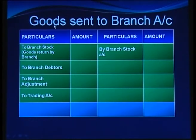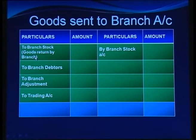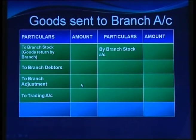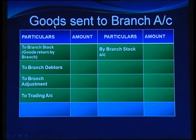The goods sent to branch account starts from the credit side — 'by branch stock account' is written with the amount. On the debit side: goods returned by branch, loading cancellation transferred to branch adjustment, and the remaining balance transferred to trading account. The loading is cancelled on the debit side of goods sent to branch and reflected on the credit side of branch adjustment, while the cost element is transferred to the trading account at year end.